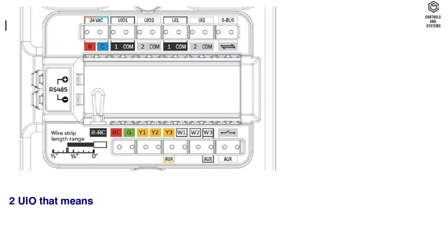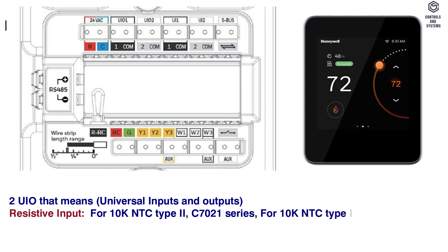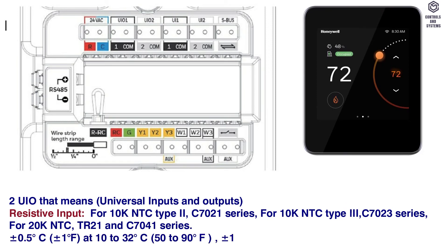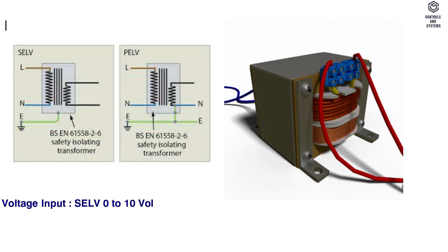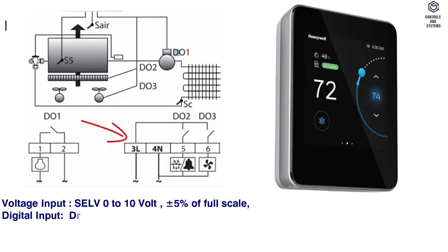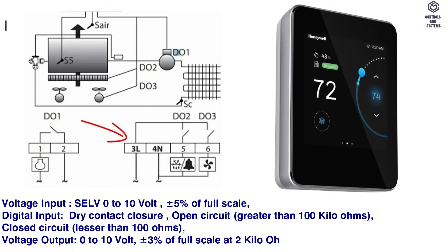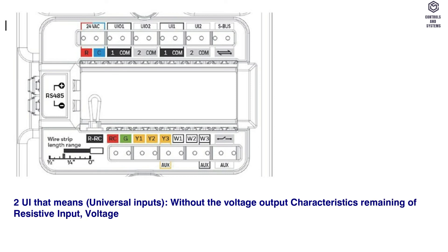I/O characteristics — Universal Inputs and Outputs (UIO): Resistive input supports 10K NTC Type 2 (C70-21 series), 10K NTC Type 3 (C70-23 series), and 20K NTC (TR-21 and C70-41 series). Voltage input: SELV 0 to 10V, ±5% of full scale. Digital input: dry contact closure; open circuit greater than 100K ohms, closed circuit less than 100 ohms. Voltage output: 0 to 10V, ±3% of full scale at 2K ohms. Universal Inputs (UI) share the same resistive input, voltage input, and digital input characteristics as UIO, but without voltage output.